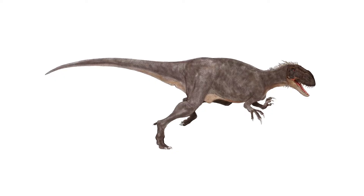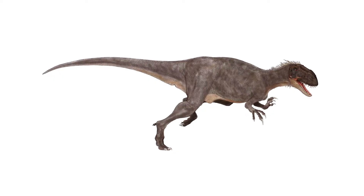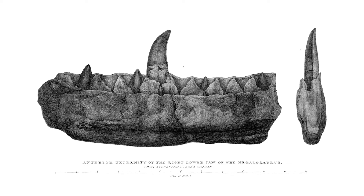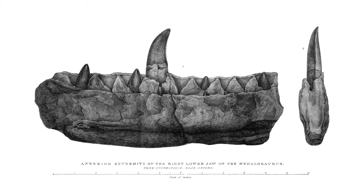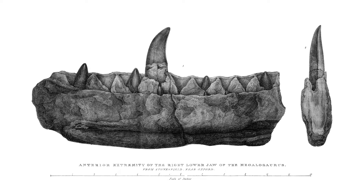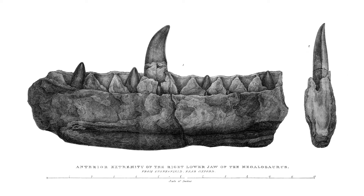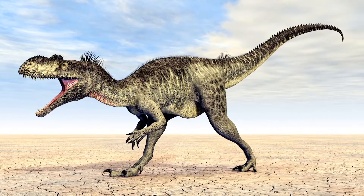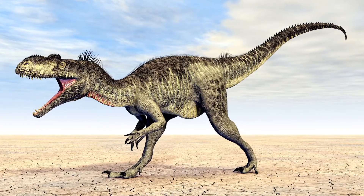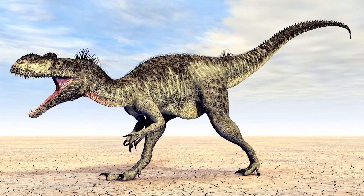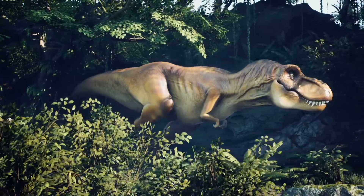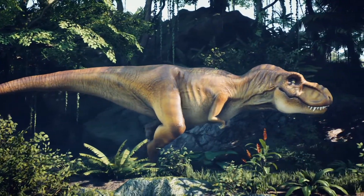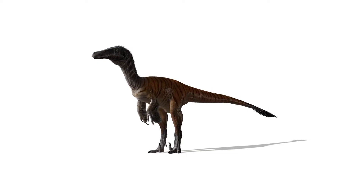This is a Megalosaurus. A fossilized jawbone discovered in 1824 by William Buckland was the first fossil that was correctly identified as belonging to a dinosaur, although the term dinosaur wouldn't be used until years later. A smaller version of the T-Rex, Megalosaurus had a square-shaped head and generally grew to about 7 meters or 22 feet long. This species is a type of theropod, a dinosaur that stands on two legs and has short arms and a long tail.